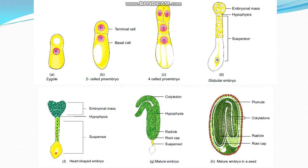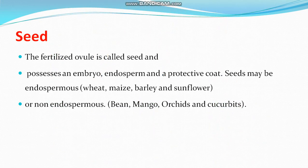Diagram (c) shows the two-celled pro-embryo divided into a four-celled pro-embryo. Diagram (d) shows the four-celled pro-embryo converted into a globular embryo. Diagram (f) shows the heart-shaped embryo. Diagram (g) shows the mature embryo. Diagram (h) shows the mature embryo within a seed.